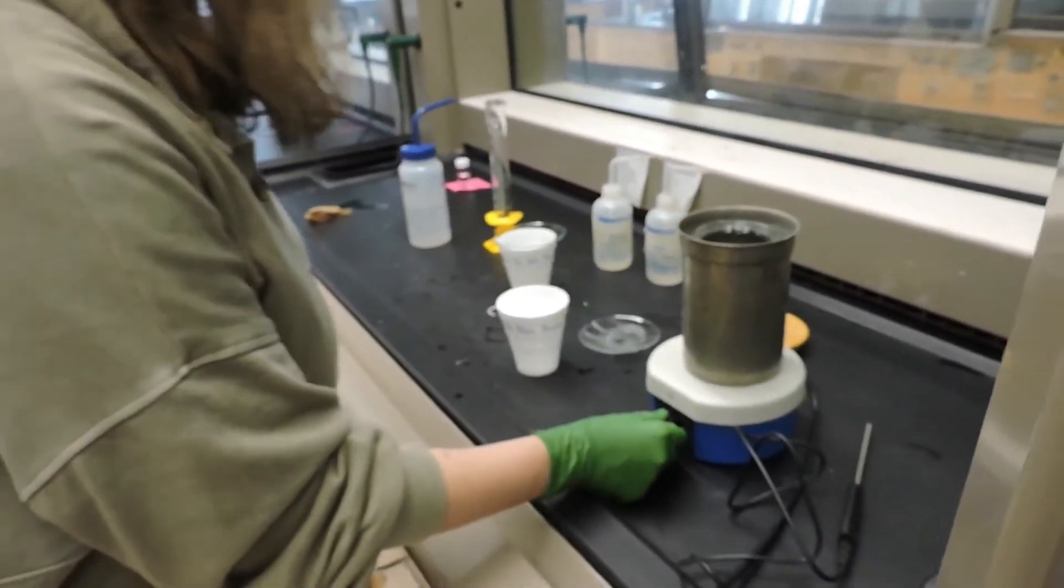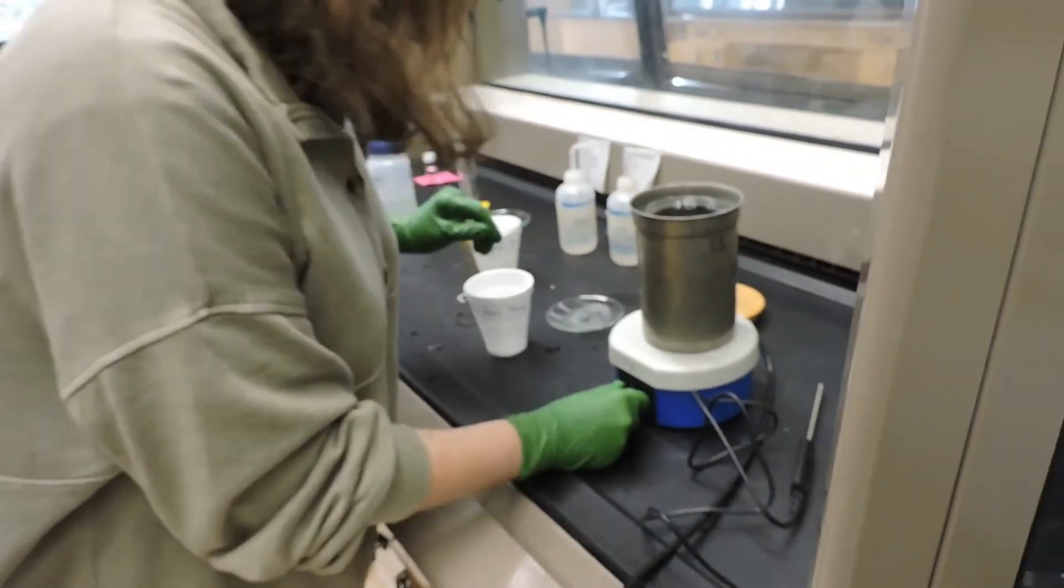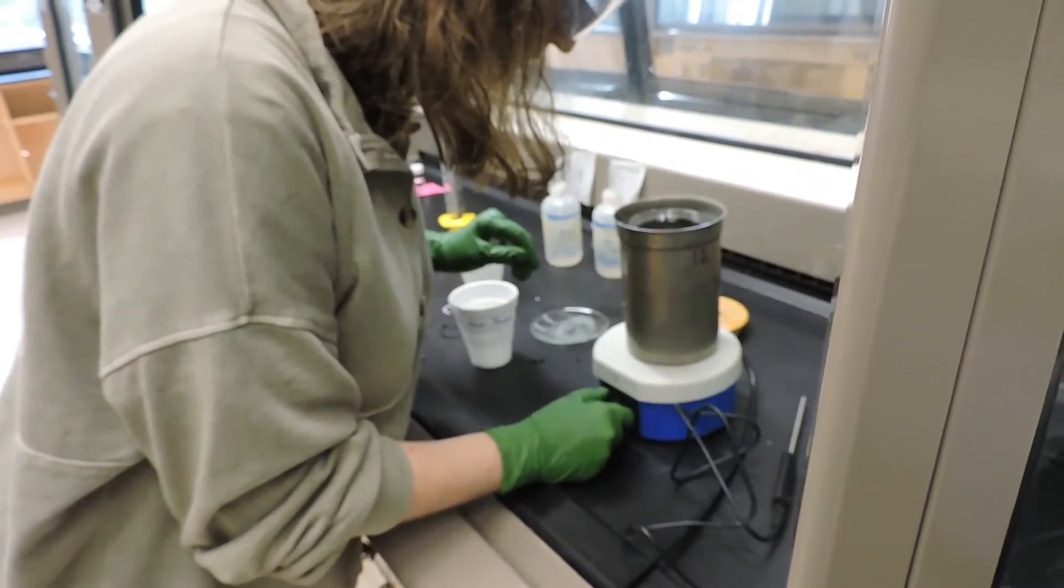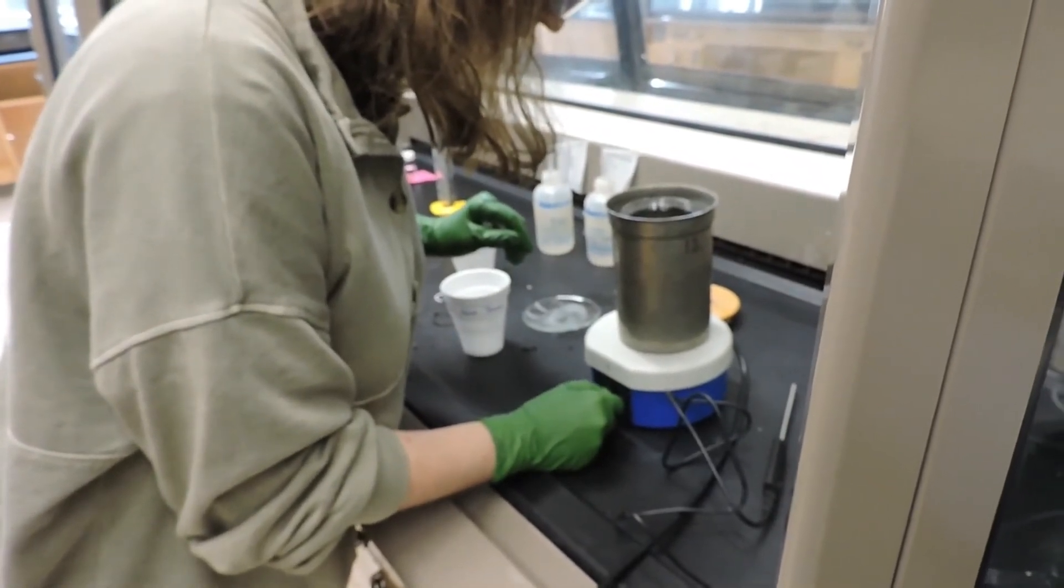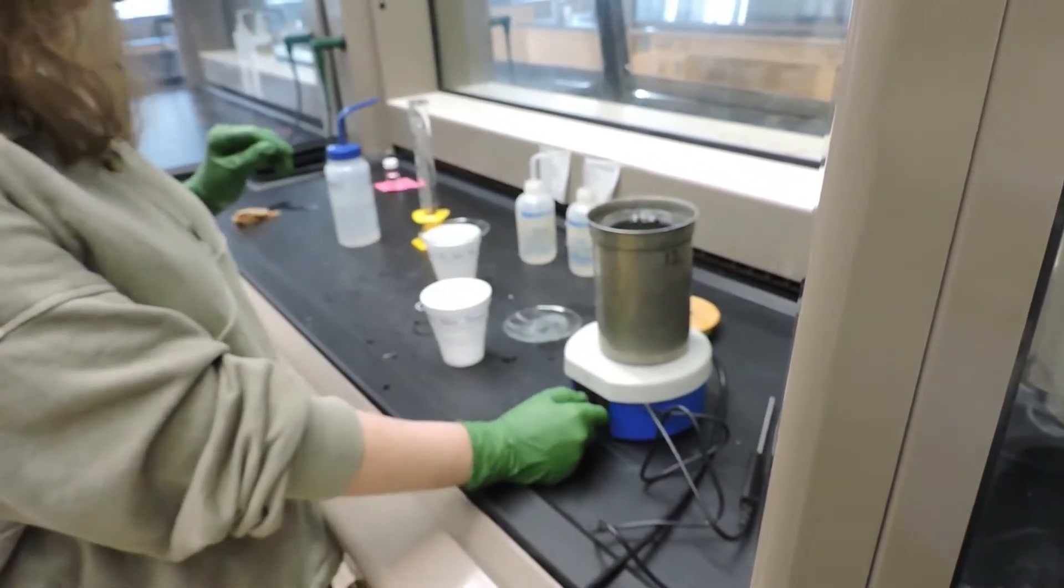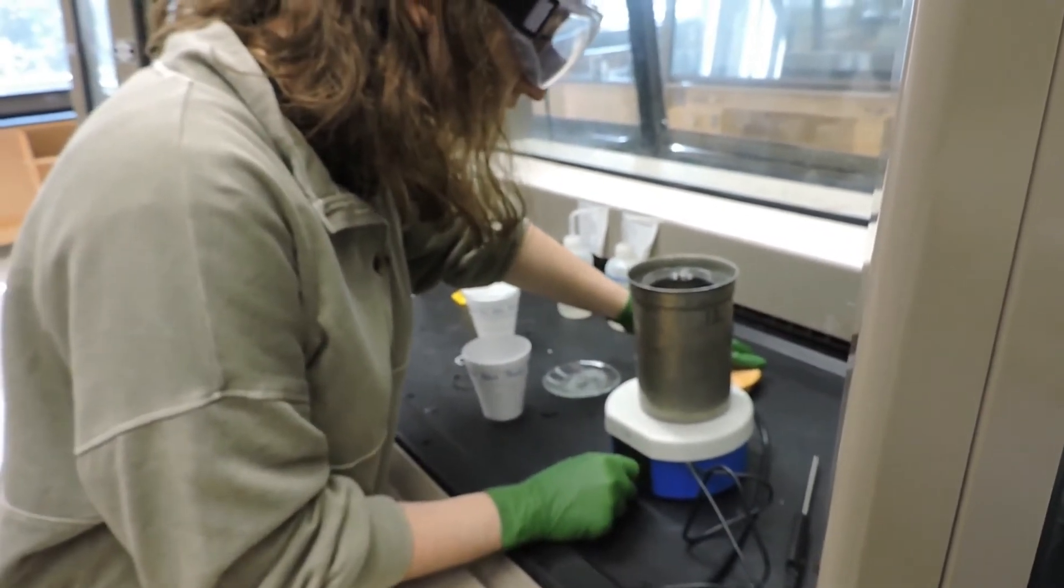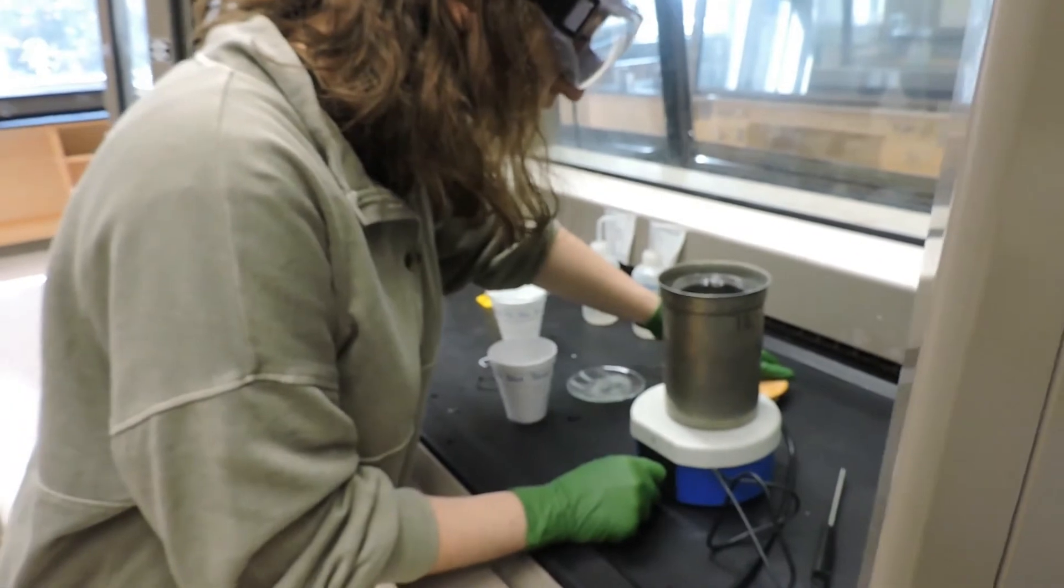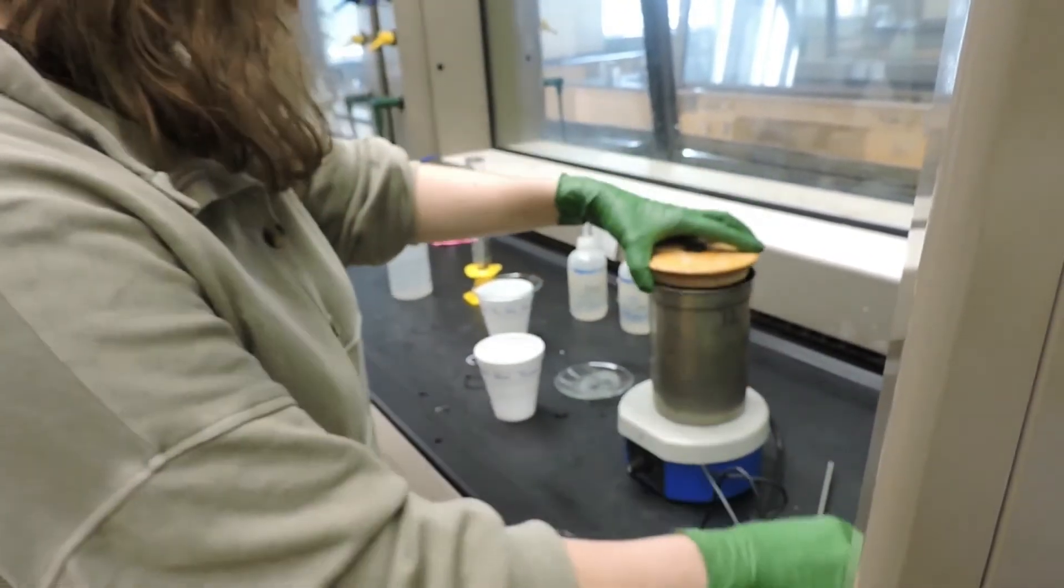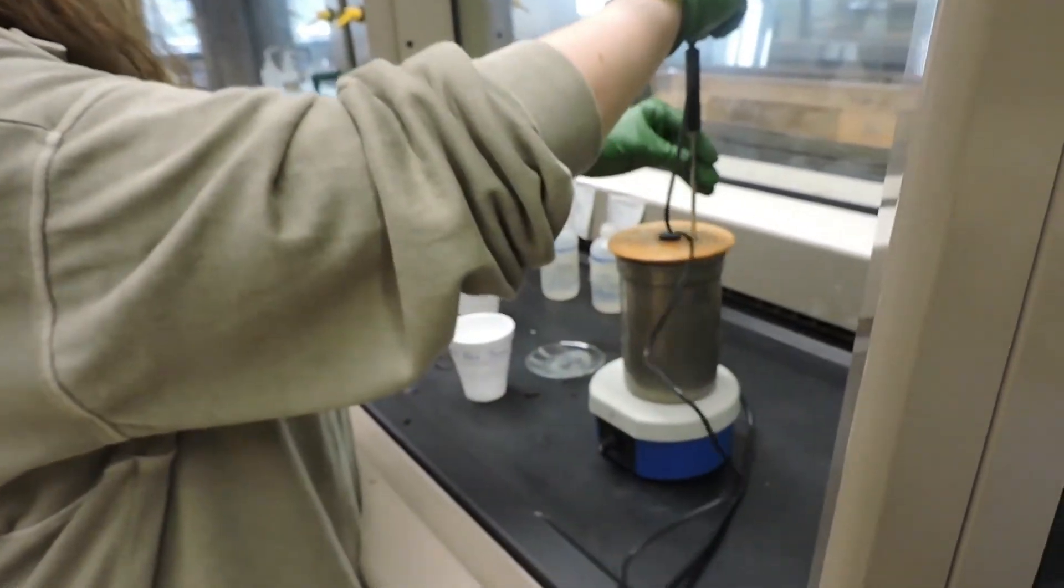Now that we have 150 milliliters of deionized water in the calorimeter, we are setting the magnetic stir to a gentle stir rate. We can assume the water and the glass parts are at the same temperature as the water for this system. So what we're going to do is cap the calorimeter, put in the probe, and wait for the temperature to stabilize.